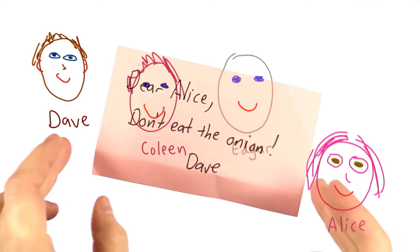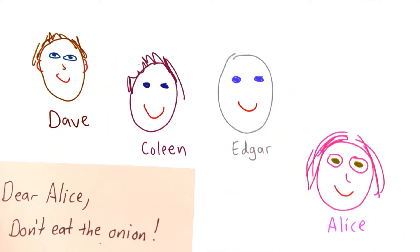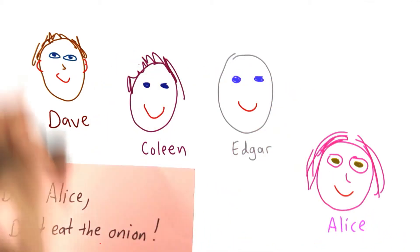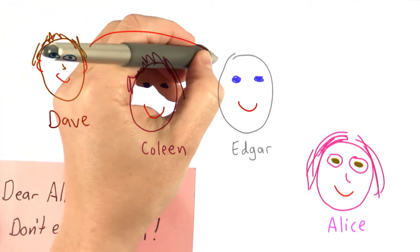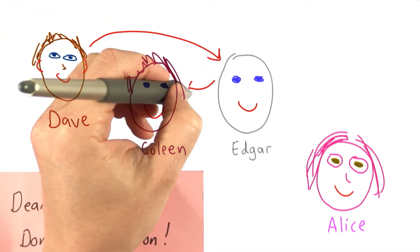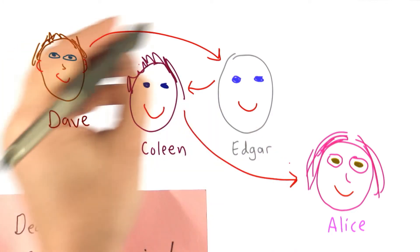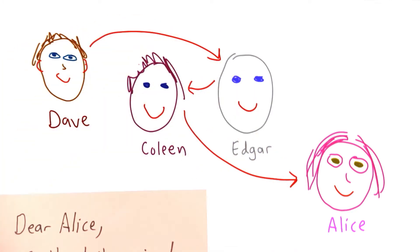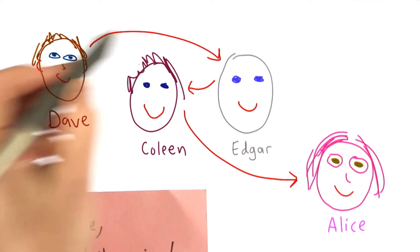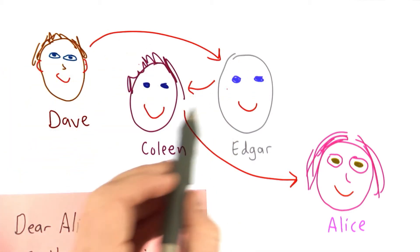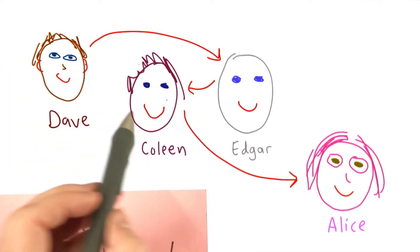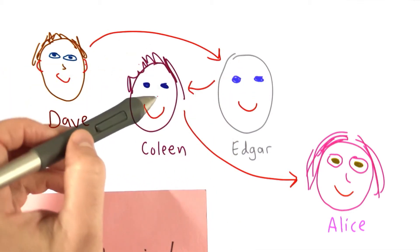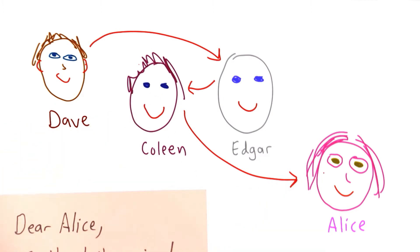This has more protection. Now Colleen doesn't know that I'm communicating with Alice, because the message is going first to Edgar, then to Colleen, then to Alice. So neither Edgar nor Colleen knows that I'm communicating with Alice. Edgar knows that I'm sending a message through him that goes to Colleen. Colleen knows that she's receiving a message from Edgar and it's going to Alice. Neither one knows both endpoints.